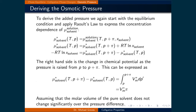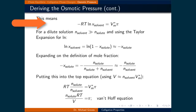This assumes that the molar volume of the pure solvent does not change significantly over the pressure difference. This means that minus RT times the natural logarithm of the mole fraction of the solvent is equal to the molar volume of the pure solvent times pi.